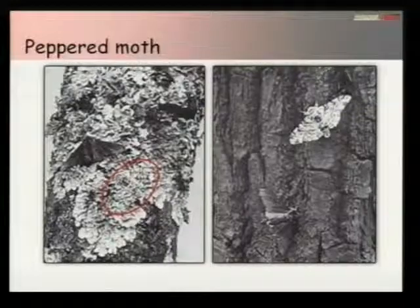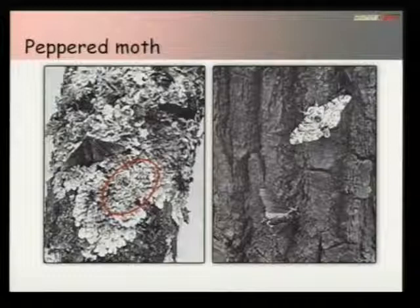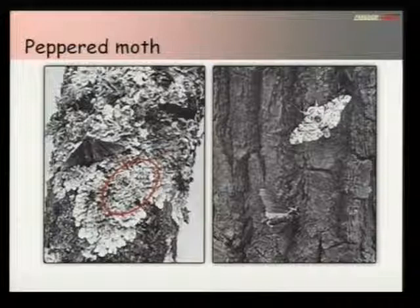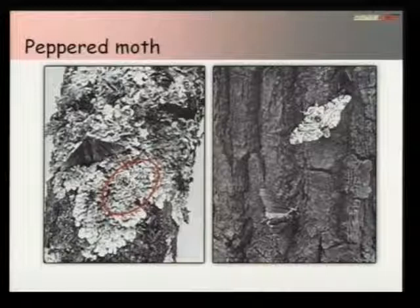The light-coloured moth blends in very well with the lichen and is not visible. On the right-hand side, you have the darkened, soot-covered tree trunk, and the light-coloured form is much more visible. If you're a bird looking for lunch, you're going to spot the light-coloured moth on the dark background, eat it. So the dark one survives and the light one disappears.